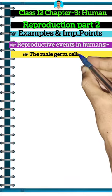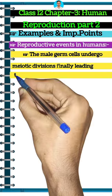Human reproduction part 2. The male germ cells undergo meiotic division, finally leading to sperm formation.